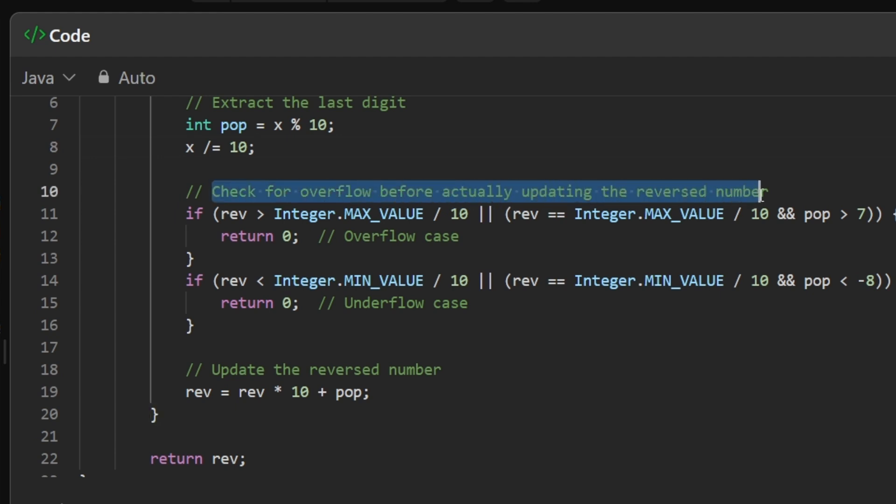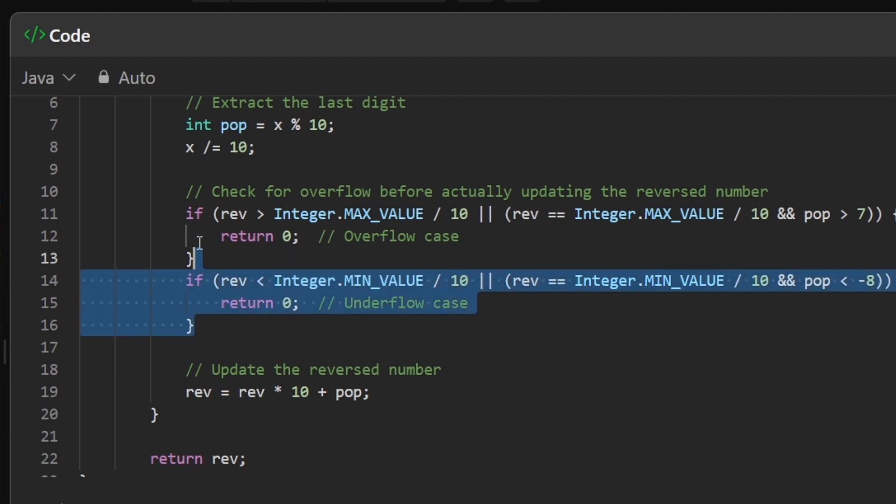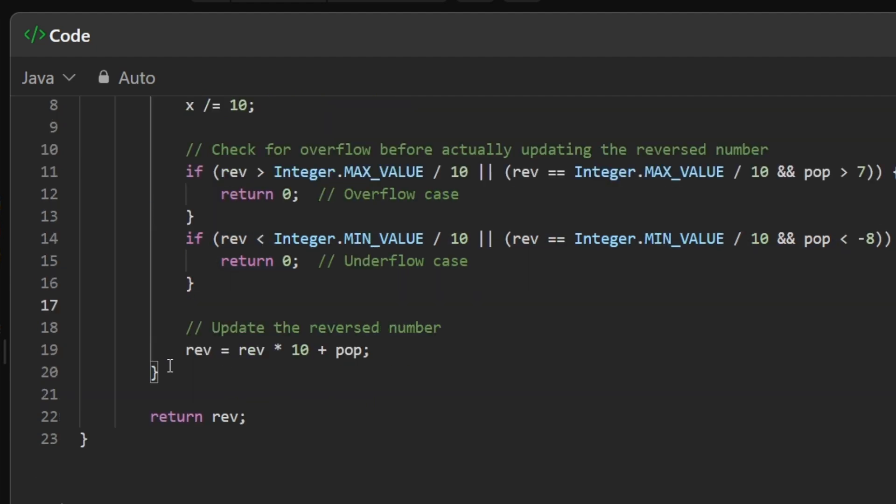Now we simply need to check the overflow condition before we start updating the reverse functionality. So we are only checking that if this given reverse value is already greater than the integer max value by 10, or if that is not the case and if the pop is greater than this value, then we can simply return 0. Otherwise, we also need to check for underflow case - the same operation in the reverse order. If we are going out of bounds in the minimum value case, if either of this is the case we can return 0.